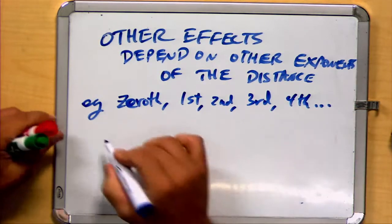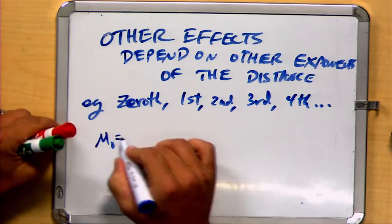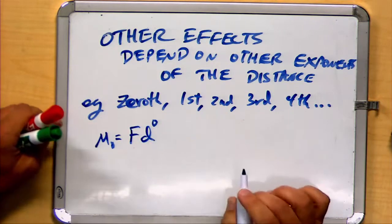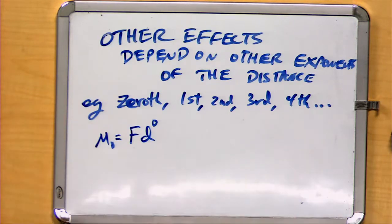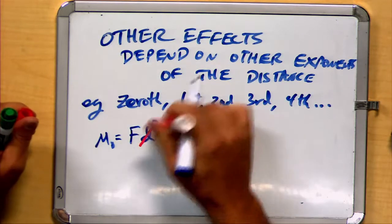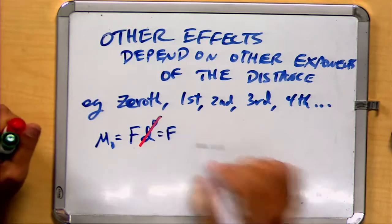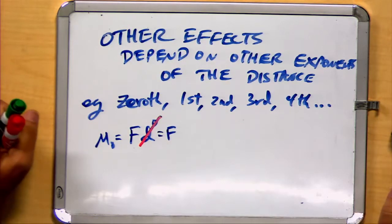And we might represent them this way. The zeroth moment would be equal to the force times the distance to the zeroth power. Well, as it turns out, the distance to the zeroth power is just a value of one. So that would end up being the force itself. It's not particularly interesting, and no real reason to describe the zeroth moment that way.